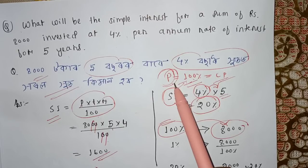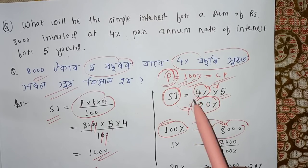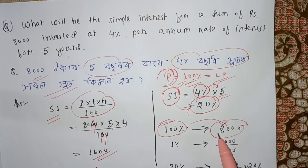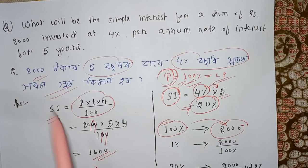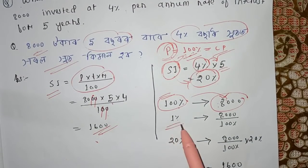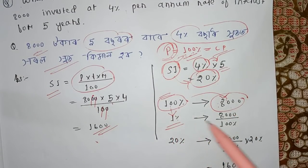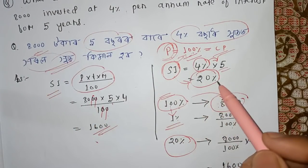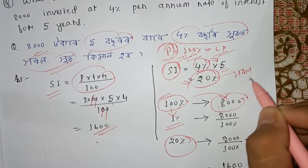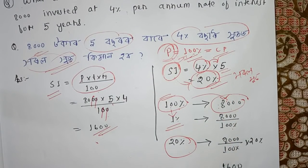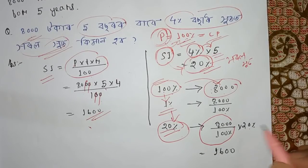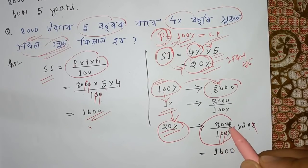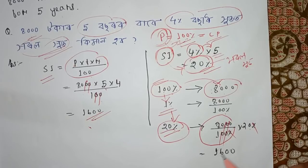Because we have 100% of the principal, the principal is 100%. So 100% means the principal, and the principal is 8,000. We have 1% of the number to divide: 8,000 divided by 100% gives us 80. We have 20% — why? Because rate into time: 4% into 5 gives 20%. So in simple interest, we have 20%. Multiplying 20% of 8,000: 20% is equal to 1,600. So the simple interest is 1,600.